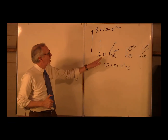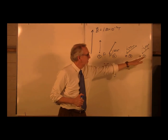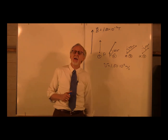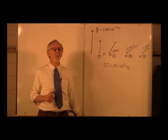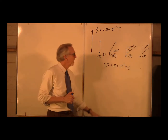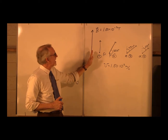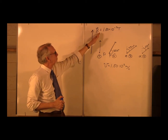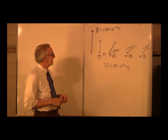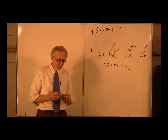Here I have four particles — 1, 2, 3, 4 — and we'll go through them one at a time. Let's imagine they all have the same speed: 1.00 times 10 to the 6th meters per second. They are all in a magnetic field pointing this way with a magnitude of 1.00 times 10 to the minus 3 Tesla. Let's figure out the force on each one.